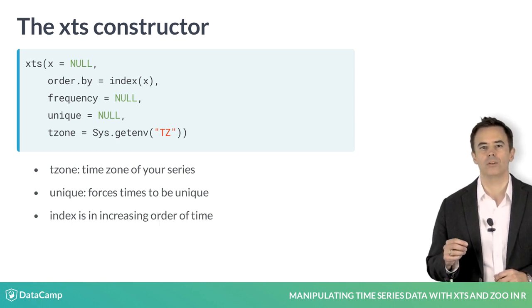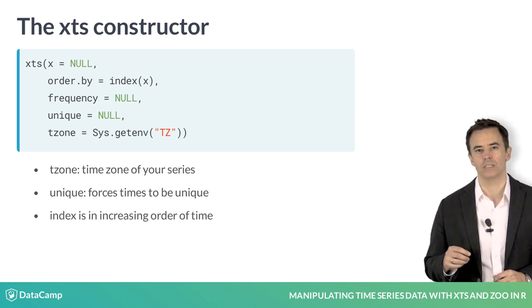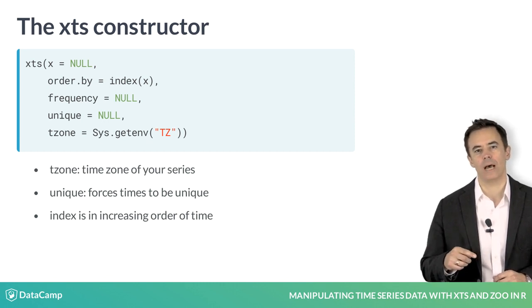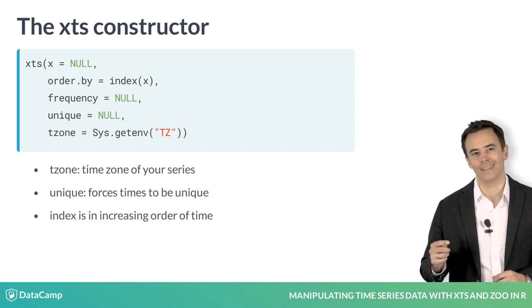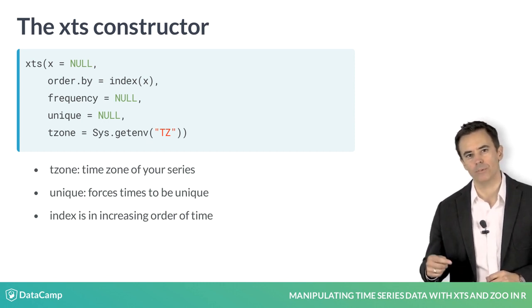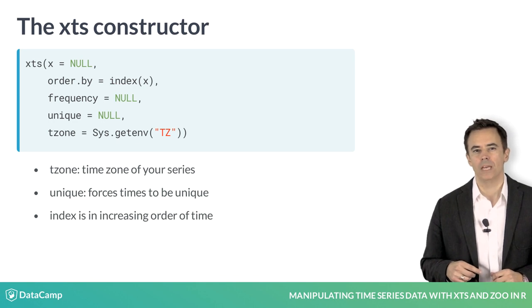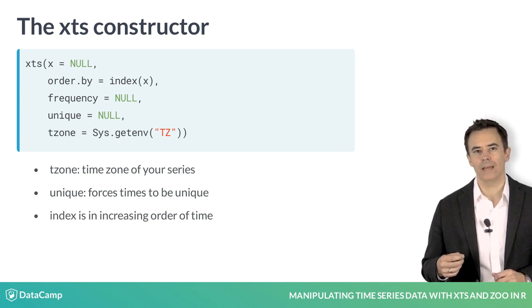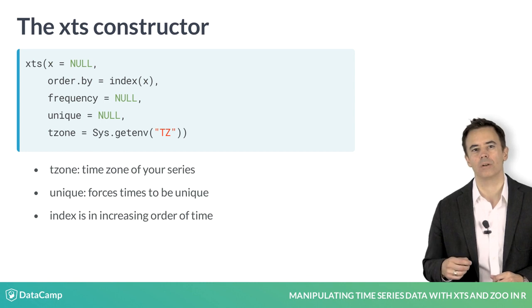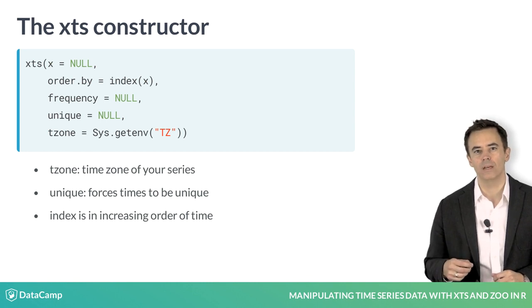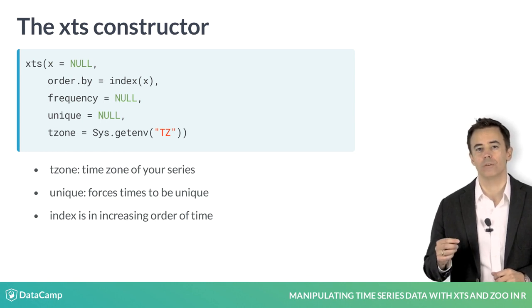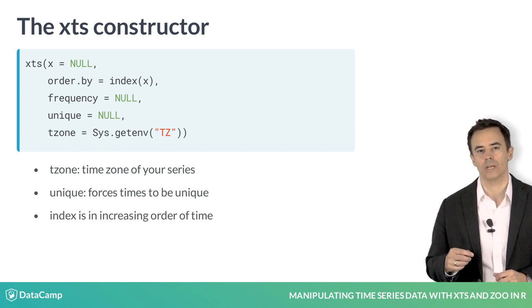One thing to note is that your index should be in increasing order of time — earlier observations at the top of your object, and later more recent observations toward the bottom. If you pass in a non-sorted vector, XTS will reorder your index and the corresponding rows of your data to ensure a properly ordered time series.